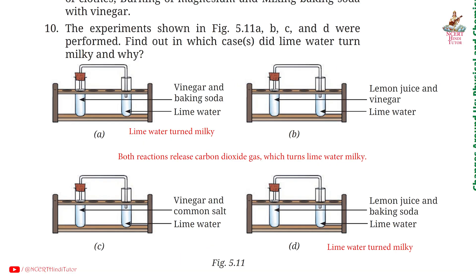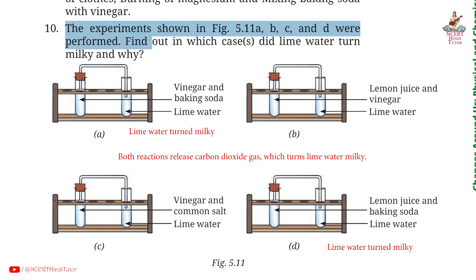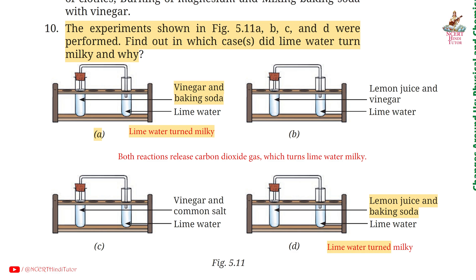Question 10: The experiments shown in figures 5.11 A, B, C and D were performed. Find out in which cases lime water turns milky and why. Answer: In test tube A — vinegar and baking soda — and in D — lemon juice and baking soda — lime water turns milky. Because both reactions release carbon dioxide gas, which turns lime water milky.